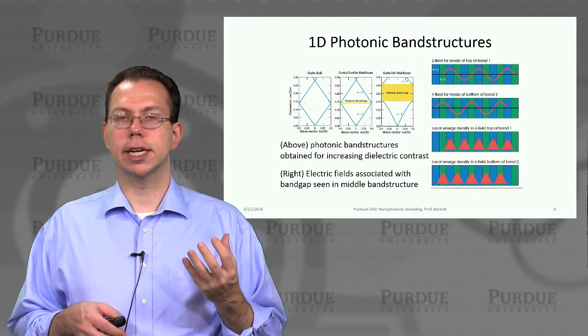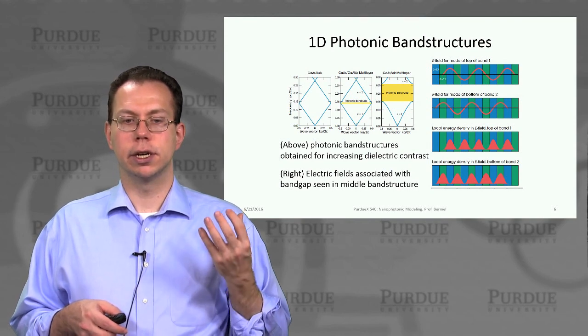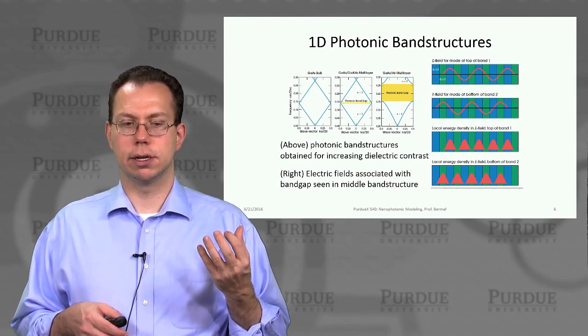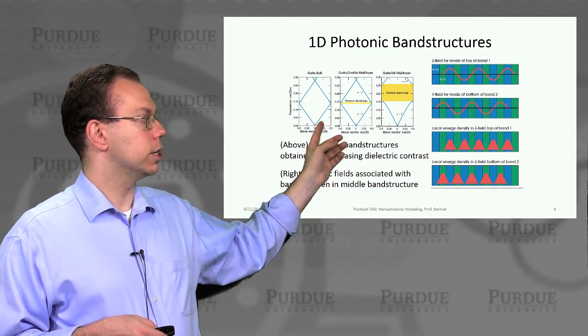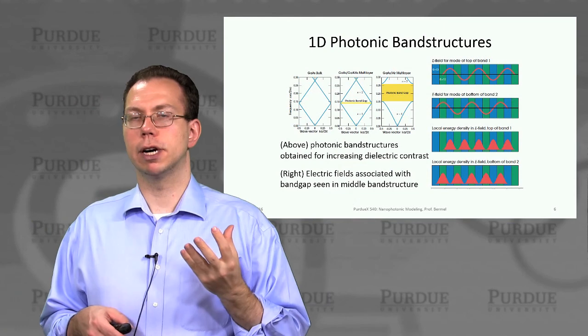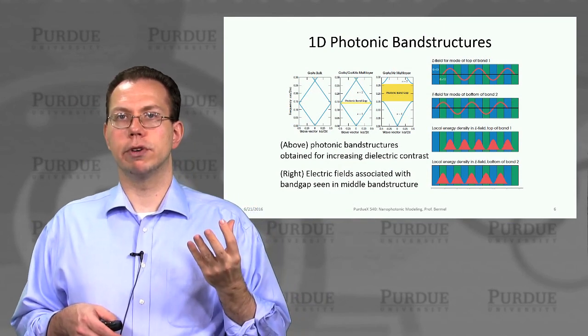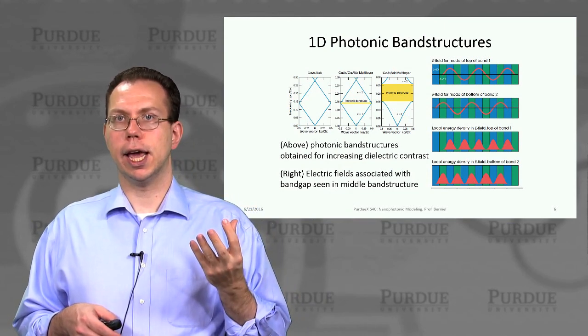In the context of photonic band structures, you've got a very similar phenomenon. The biggest difference is that the dispersion relation is linear because you probably know that in photons E equals ck,